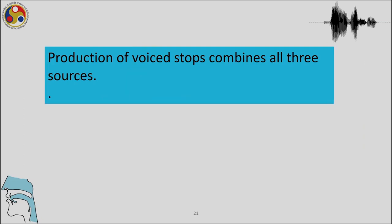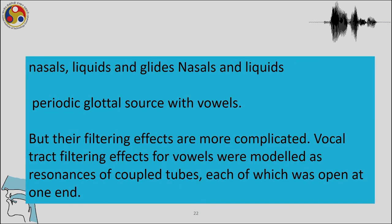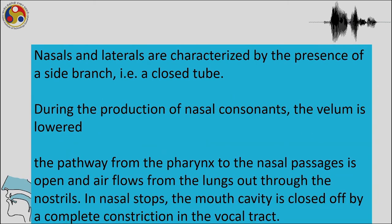For the production of sounds, all sources can be combined: the glottal source, the vocal tract filter, and the frequency components. After their combination, we have the peculiar properties of nasals, liquids, glides, stops, and fricatives. Nasals, liquids, and glides have a periodic glottal source like vowels, but the filtering effects are more complicated. Vocal tract filtering effects for vowels are modeled as resonances of coupled tubes open at both ends, but for these consonants it is modeled as closed at one end.